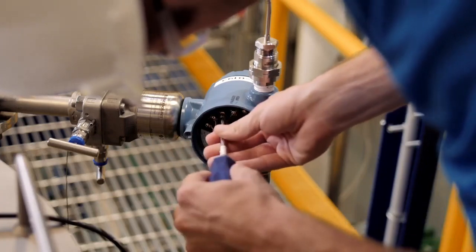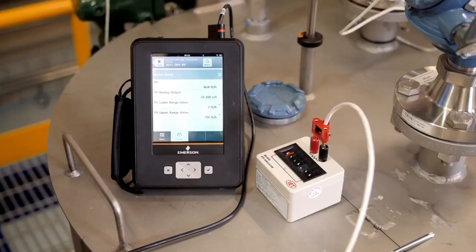We will start by first removing the RTD leads from the transmitter and connecting the simulators. Once again, go to the calibration page of the Trex and select the process temperature trim option.